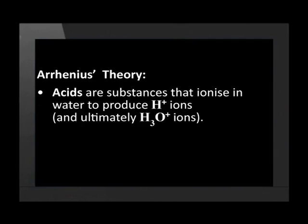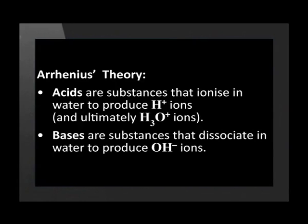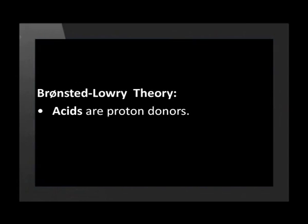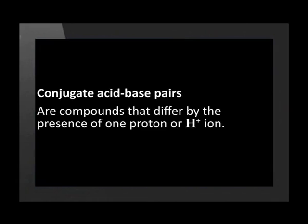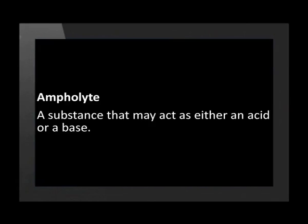Let us recap what we have learned in this lesson. Arrhenius proposed the theory that acids are substances that ionize in water to produce hydrogen ions, and bases dissociate in water to produce hydroxide ions. According to the Brønsted-Lowry theory, acids are proton donors and bases are proton acceptors. Conjugate acid-base pairs are compounds that differ by the presence of one proton or H⁺ ion. All acids have a conjugate base formed when their proton has been donated; likewise, all bases have a conjugate acid formed after they have accepted a proton. Finally, an ampholyte is a substance that may act as either an acid or a base.